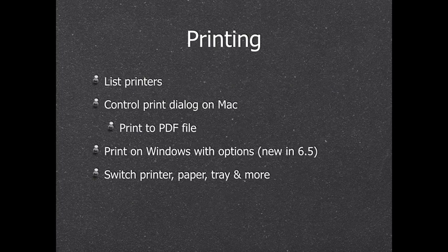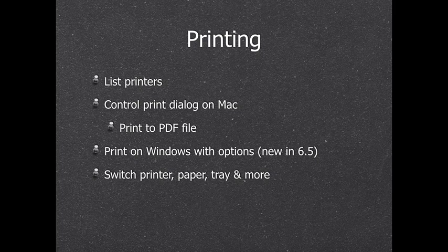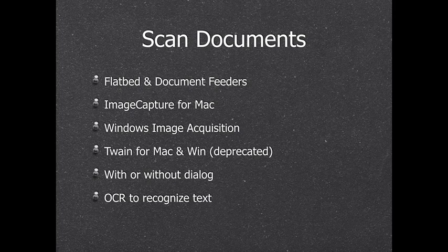For printing, we can list available printers on a computer. We can control the print dialog on Mac — redirecting printing to a certain printer or printing to PDF. We can also run the print command on Windows and select options in the dialog. You can use the plugin to print to a certain printer, use a certain paper, use a certain paper tray, and set options like page range, color, or black and white.